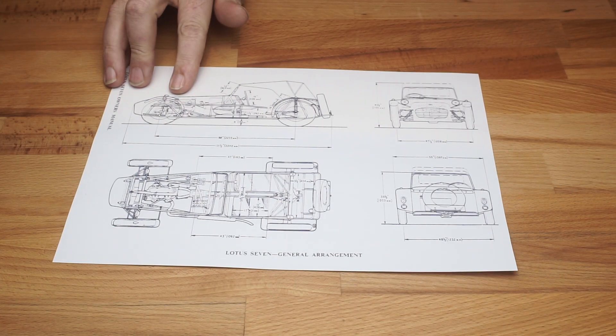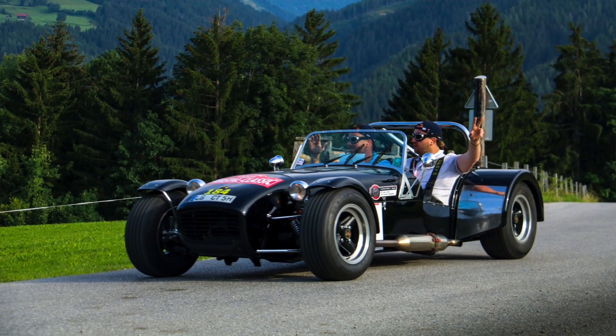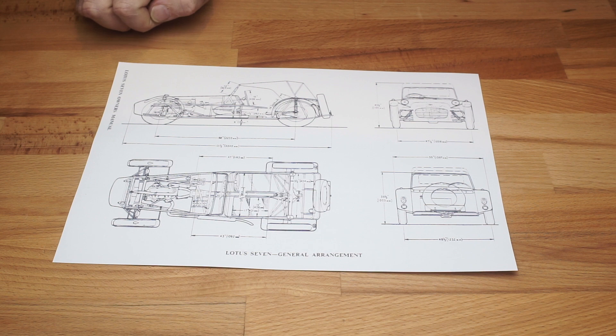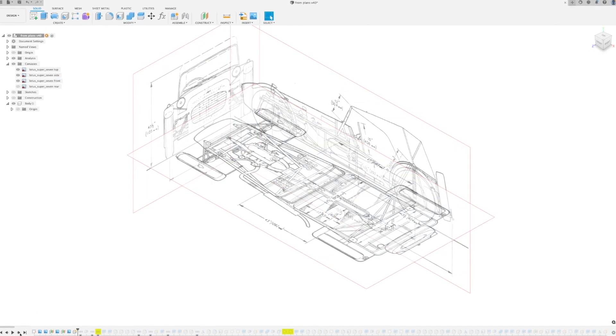While trawling the internet I found this picture from an old Lotus 7 owner's manual with all the dimensions marked and I knew immediately that I'd have to model one. So I imported it straight into Fusion and began modeling.